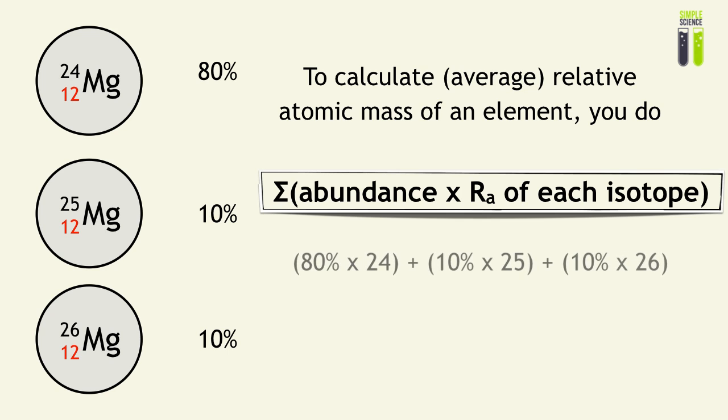So for example, in this situation, we take the abundance value of magnesium-24 as 80% multiplied by 24, add that of magnesium-25 and magnesium-26, that is 10% times 25 add 10% times 26, and this gives us...